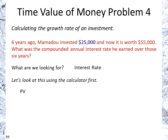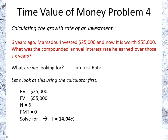We enter the present value of $25,000, then the future value of $55,000. We also have the time, or number of periods, of six years. We enter zero for the payment because there are no interim payments, and we solve for the interest rate, which is 14.04%. That's all you need to know if you're using a calculator.